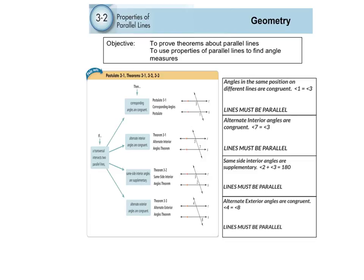The difference in this section compared to last section, 3.1, is that in 3.1 lines weren't parallel. We talked about all these different angle pairs: alternate interior, alternate exterior, corresponding, and same side interior.